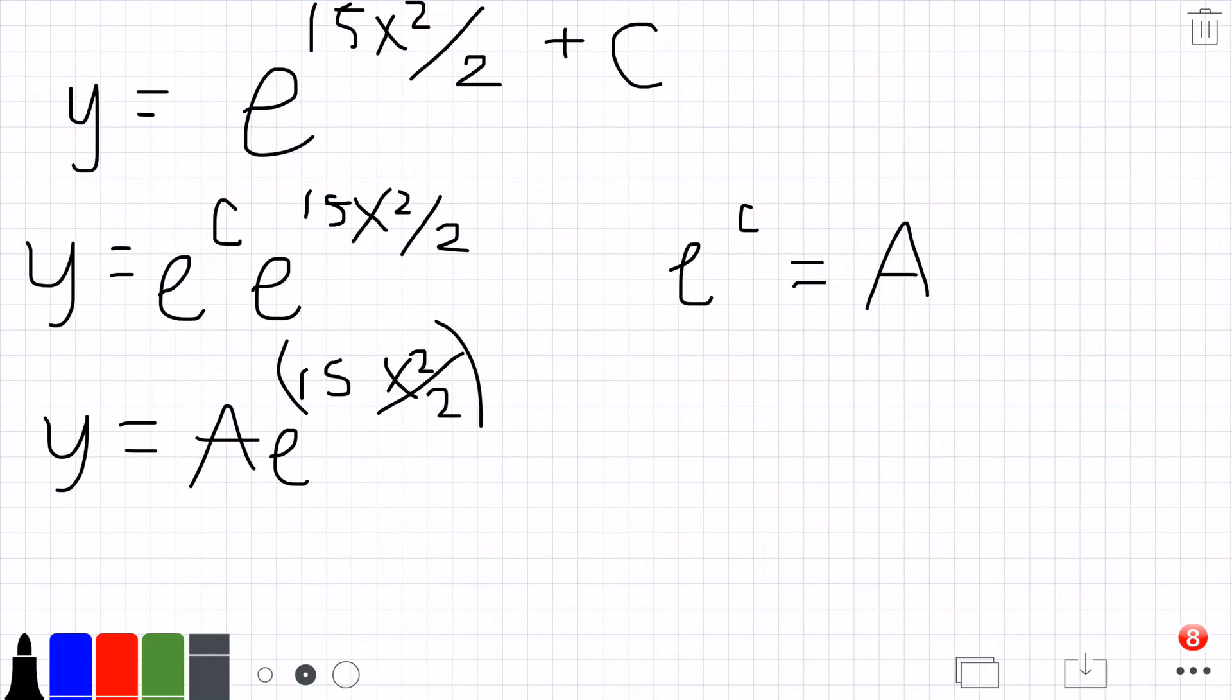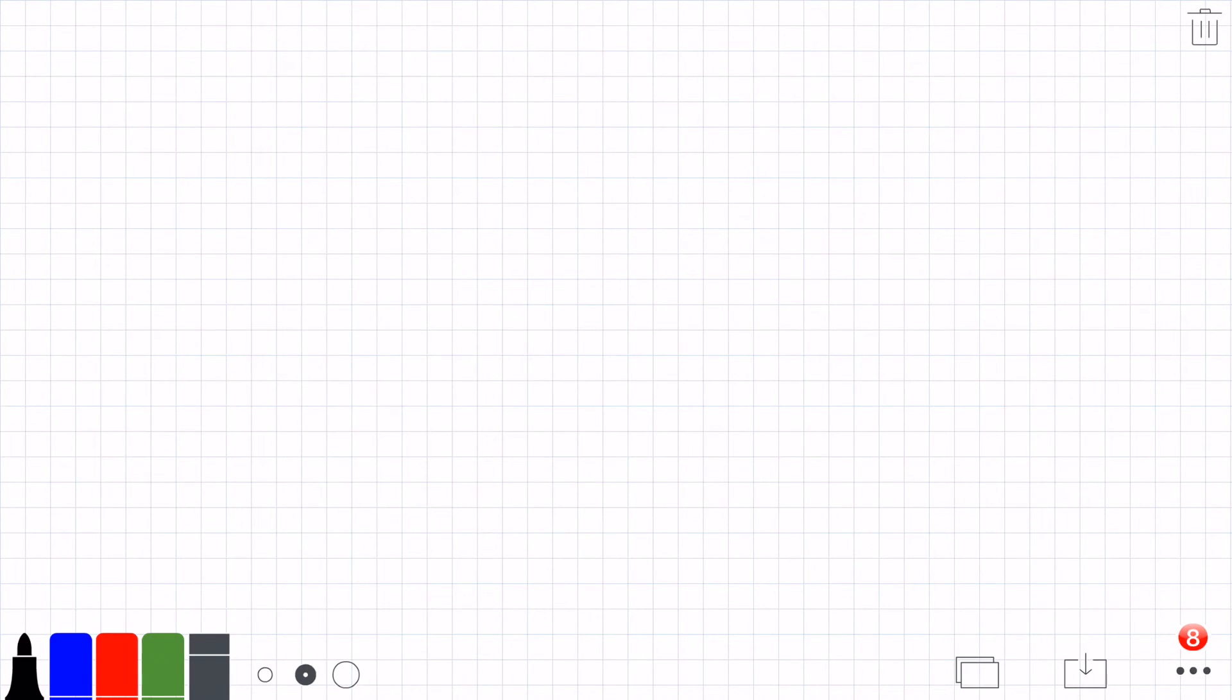Now we want to find when this passes through the point (0,1). When y equals 1, x equals 0.